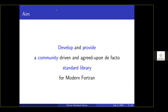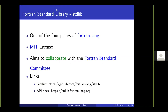As mentioned by Milan, the aim of this project is to develop and provide a community-driven, agreed-upon de facto standard library for Fortran. The Fortran standard library is one of the four pillars of the Fortran-lang project. It is under the MIT license so that everybody can use it in their code, commercial or not, open source or not, and we aim to collaborate with the Fortran standard committee.